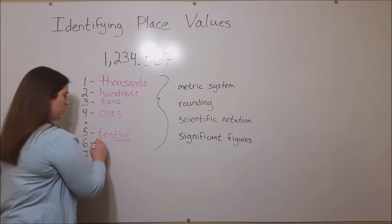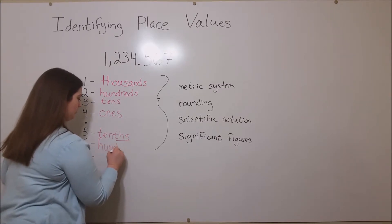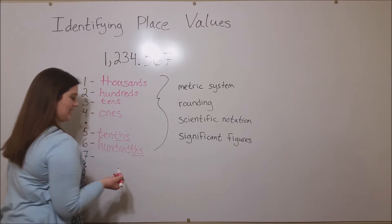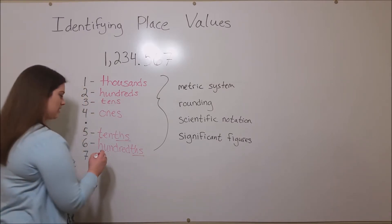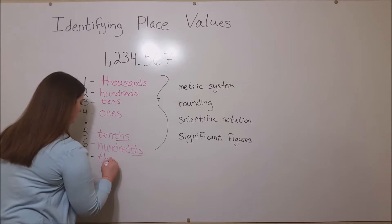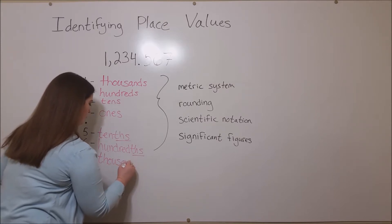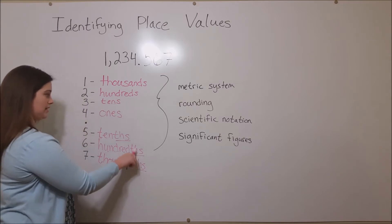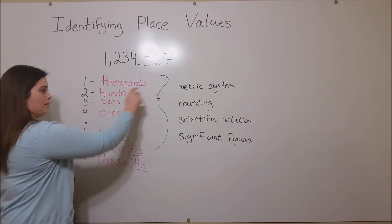The 6 is in the hundredths place, which also has the THS on the end, and the 7 is in the thousandths place, again with that THS that distinguishes these three from these top three.